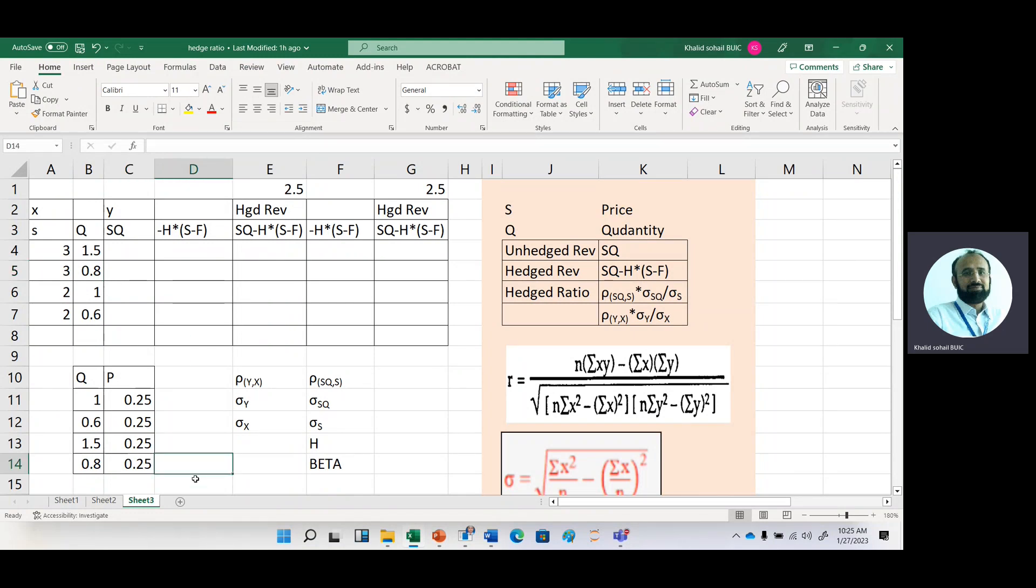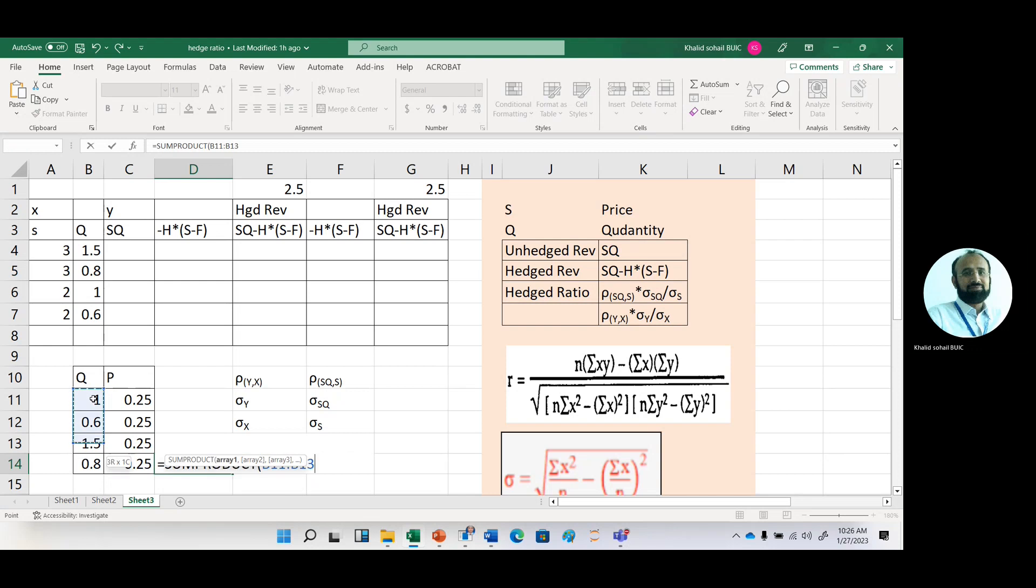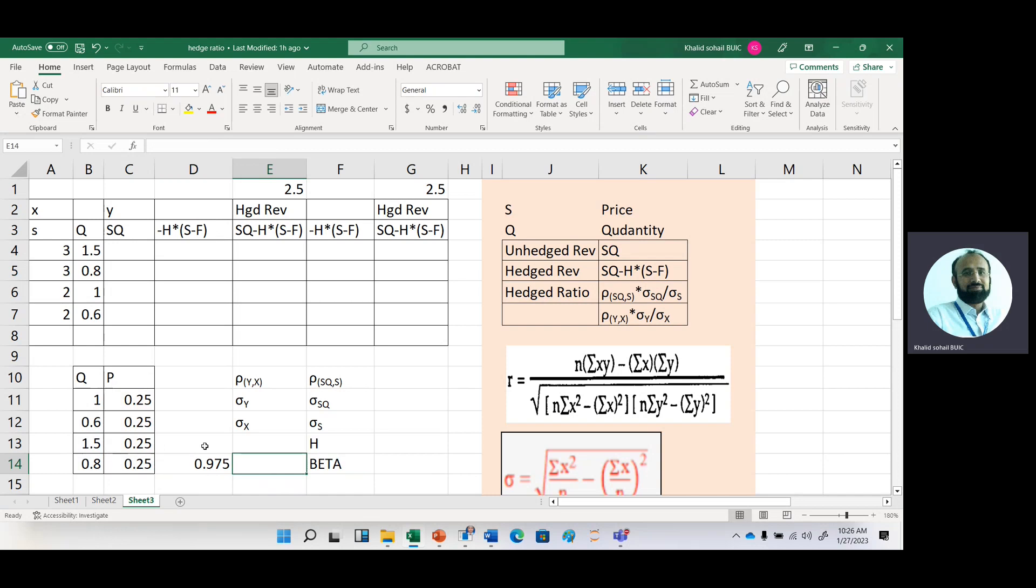To get expected quantity, we have the same data. We will use sum of product function. Then second series. We can get by using embalt function as well.